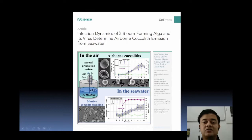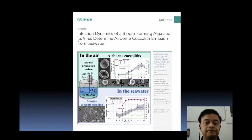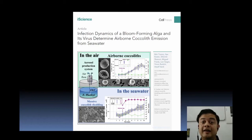There is a paper in iScience (Cell Press) titled 'Infection dynamics of bloom-forming alga and its virus determine the airborne coccolith emission from seawater.' This is about viral disease on bloom-forming coccolithophores. All these eukaryotes are susceptible to various viruses, just like bacteriophages. Viral diseases of unicellular eukaryotes and algae are very rarely studied — it's a highly neglected but exciting field.